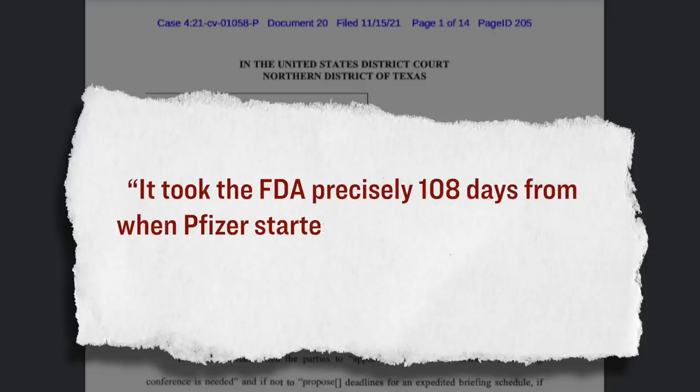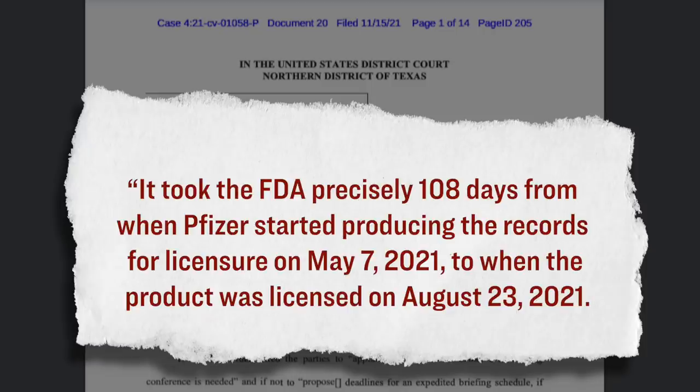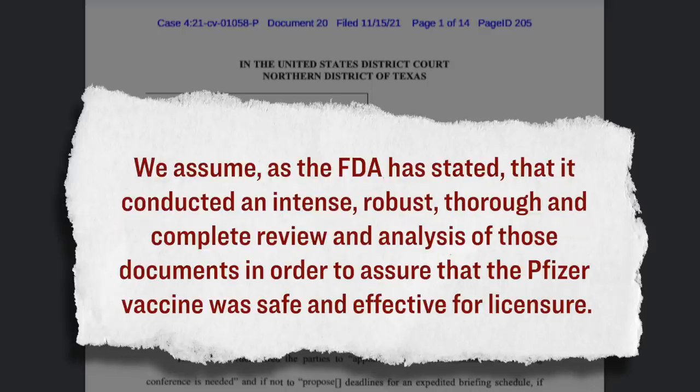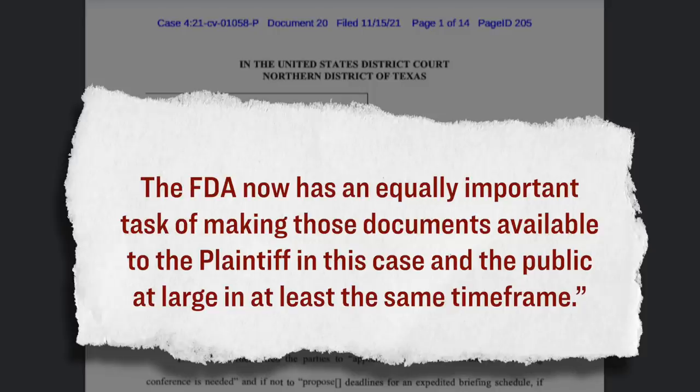Here's part of the argument that the doctors were making in their lawsuit on why the disclosure was important, and more specifically, why it needed to be done in a timely manner. Quote: It took the FDA precisely 108 days from when Pfizer started producing the records for licensure on May 7, 2021, to when the product was licensed on August 23, 2021. We assume, as the FDA has stated, that it conducted an intense, robust, thorough, and complete review and analysis of those documents in order to assure that the Pfizer vaccine was safe and effective for licensure. The FDA now has an equally important task of making those documents available to the plaintiff in this case and the public at large in at least the same time frame.